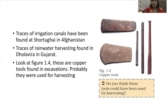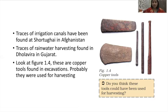Traces of irrigation canals have been found at Shortugai in Afghanistan. Traces of rainwater harvesting have also been found in Dholavira in Gujarat, which shows that Harappans made arrangements for irrigation in areas where rainwater was not enough. Copper tools found in excavations were probably used for harvesting.